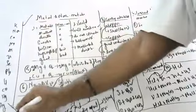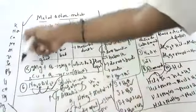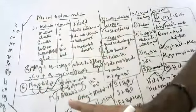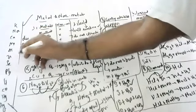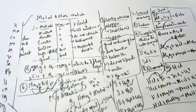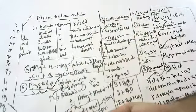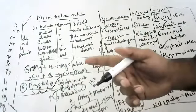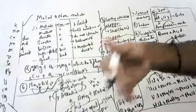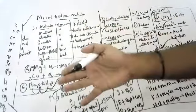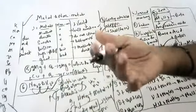The reactivity series is the arrangement of metals in decreasing order of reactivity. Students Surya and Nandika are asked to repeat the definition: arrangement of metals in decreasing order of reactivity.